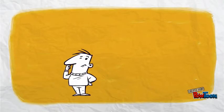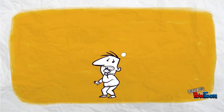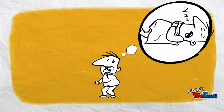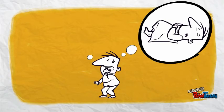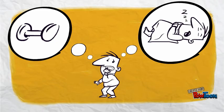Let's look at the first fundamental lesson, which is about how individuals make decisions. People face trade-offs among alternative choices, and the cost of any action is measured in terms of foregone opportunities. Rational people make decisions by comparing marginal costs and marginal benefits.